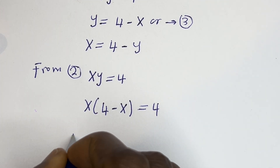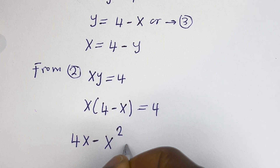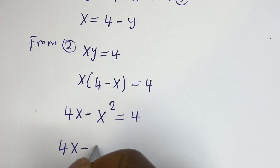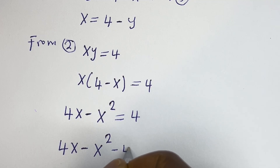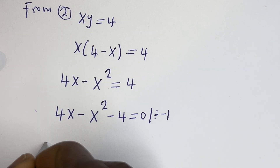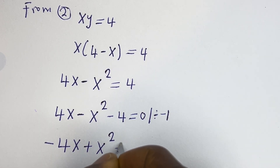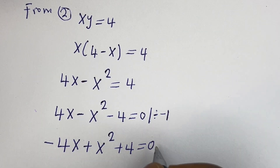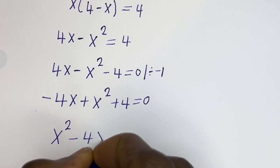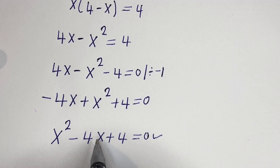Let's open the bracket: x multiplied by 4 is 4x, minus x multiplied by x is x squared, equal to 4. So we have 4x minus x squared minus 4 equals 0. Dividing all terms by minus 1 and rearranging into standard form: x squared minus 4x plus 4 equals 0. This is a quadratic equation which can be solved using the quadratic formula.